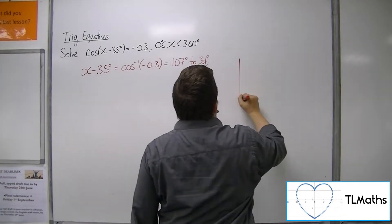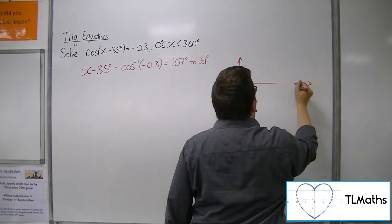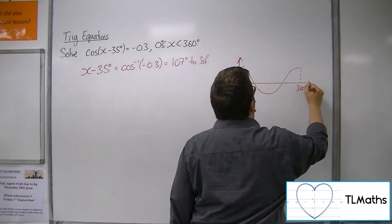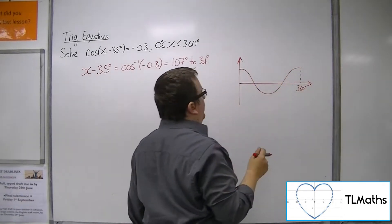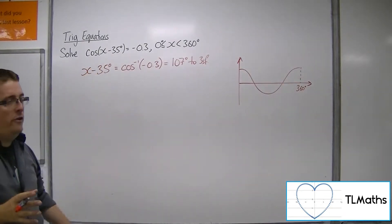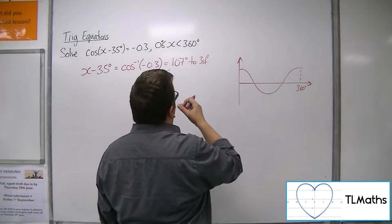Now at this point, sketch cosine between 0 and 360. We're not worrying about the transformed curve here. Don't worry about that. Sketch the original curve of cosine.